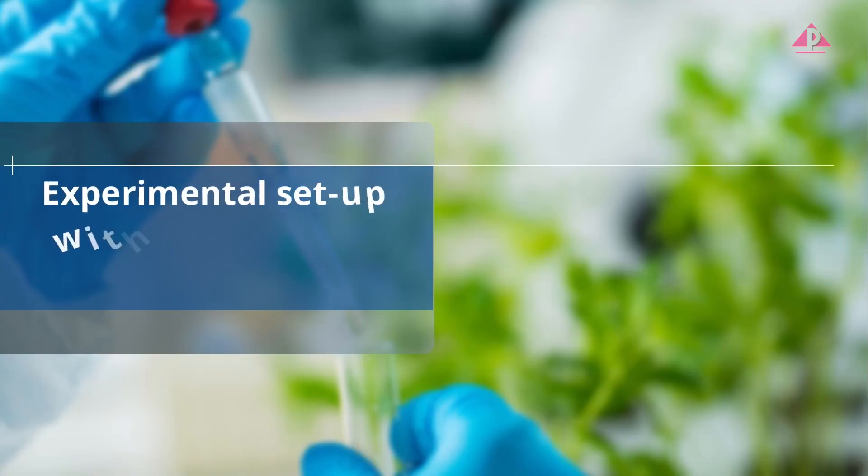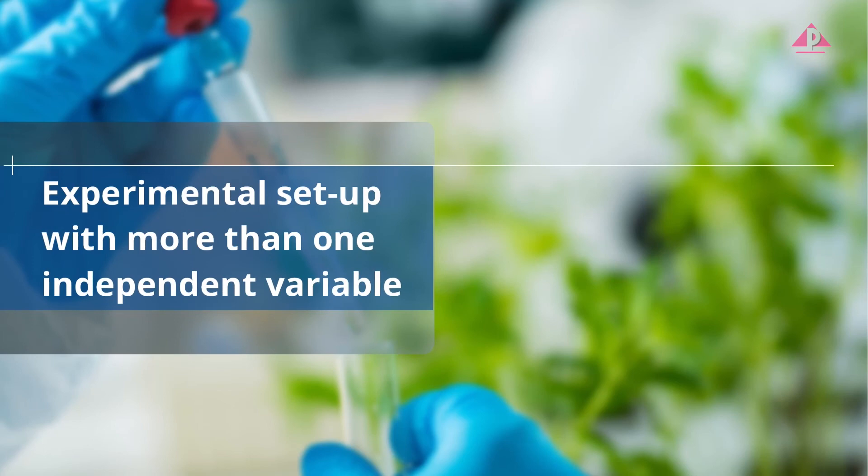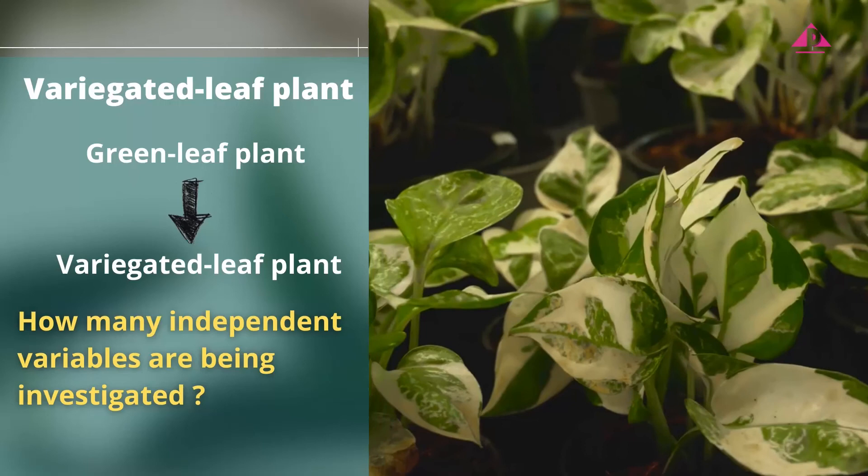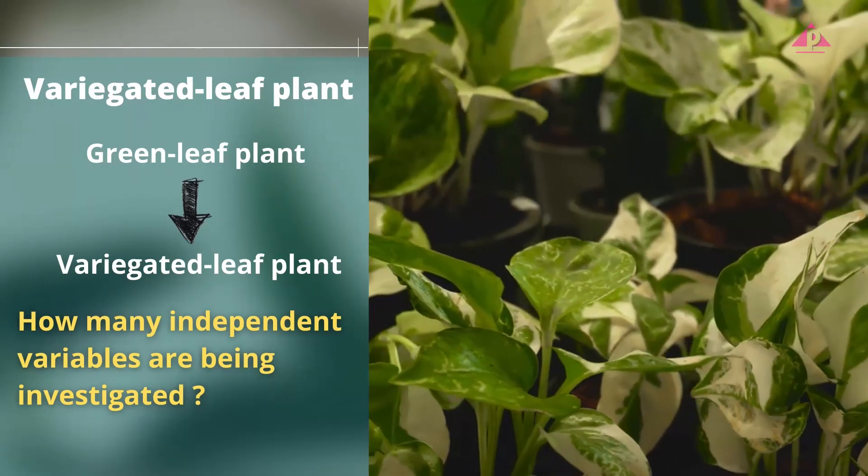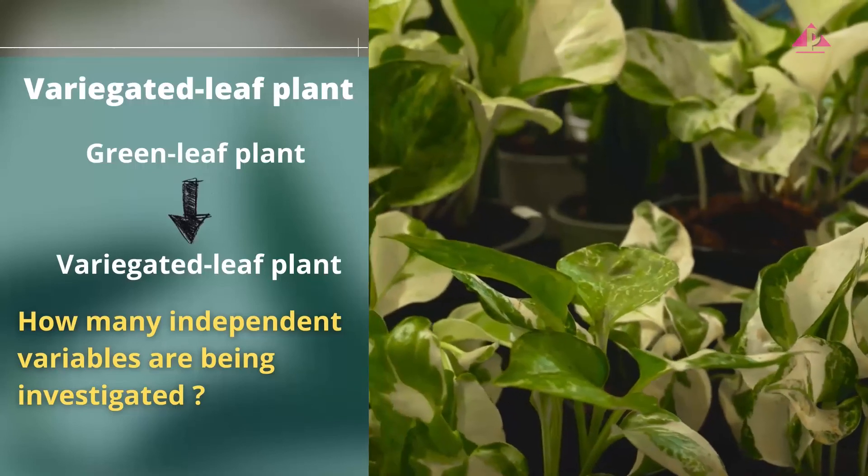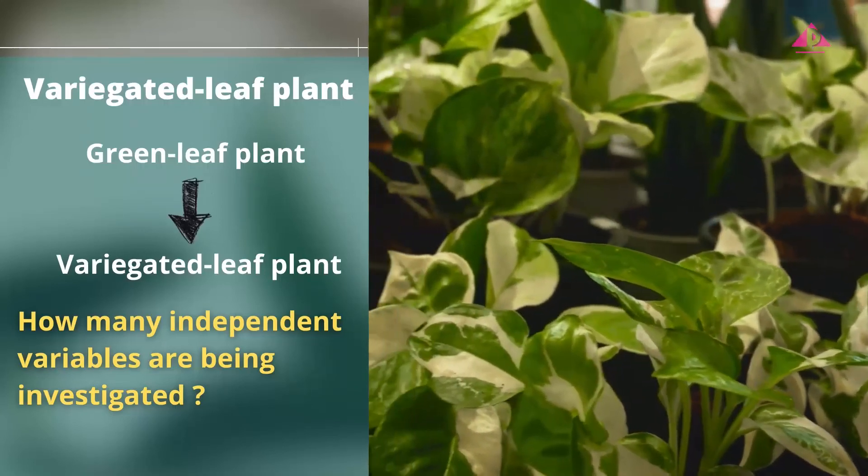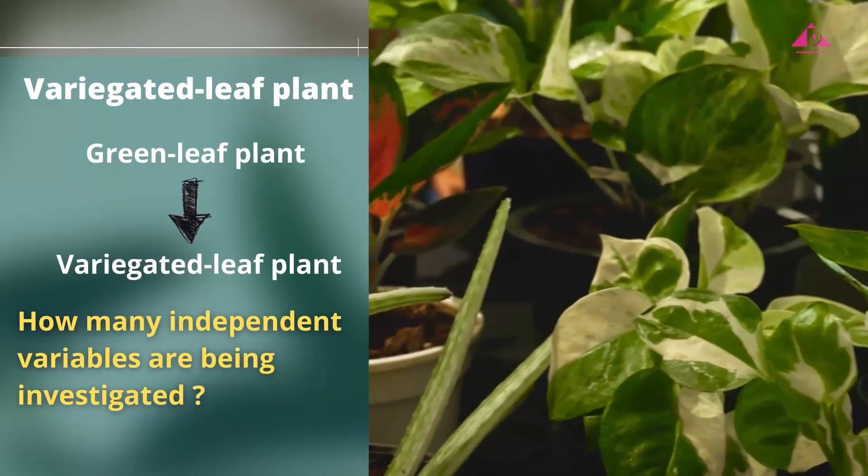Next, we are going to discuss experiments involving more than one independent variable. What if the green leaf plant is replaced by a variegated leaf plant to repeat the same experiment? How many independent variables are being investigated?